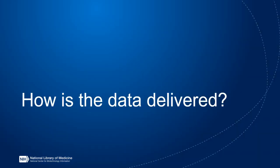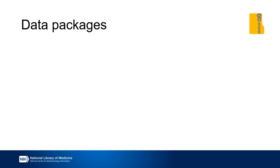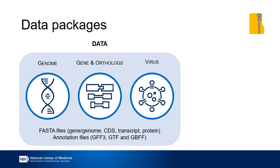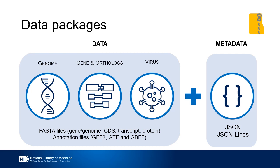Now that I've introduced NCBI datasets, the next important point is to understand how the data is delivered. For all options, data is delivered as a data package, which is a zip archive that contains both data and metadata files. Depending on availability, we have sequence files in FASTA format and annotation files as GFF3, GTF, or GBFF formats. The metadata files are in JSON or JSON lines format and they consolidate information spread over multiple files on FTP, which simplifies access to that information.